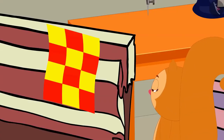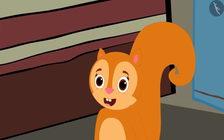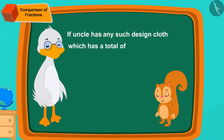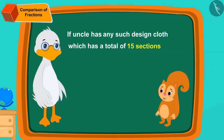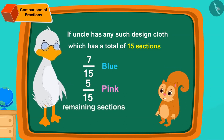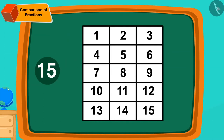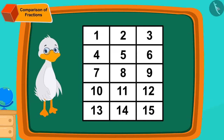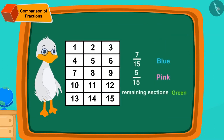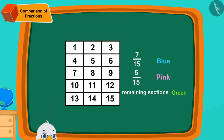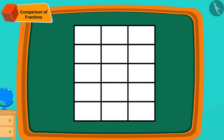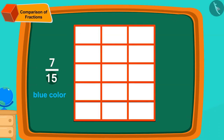While Golu was standing at Uncle's shop, Chanda came there. She saw the design and liked it very much. She asked Uncle if he has any cloth which has a total of fifteen sections — seven fifteenths should be blue, five fifteenths pink, and the remaining sections should be green. Children, here fifteen means the cloth will be divided into fifteen equal parts. Uncle showed a white cloth with fifteen sections.